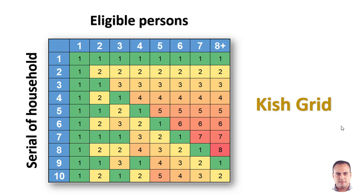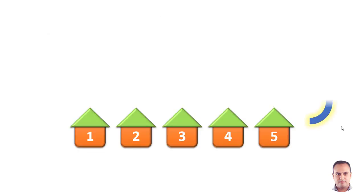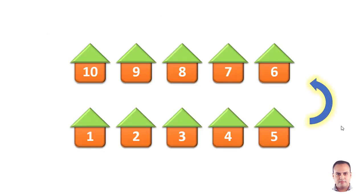Rows are serial of households. Columns are eligible persons in the household. Assume that we are moving from house to house in our field survey.